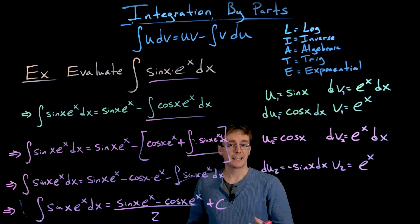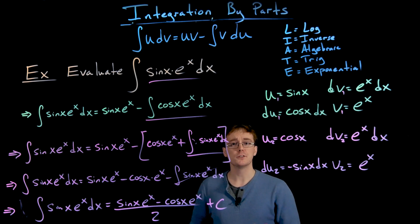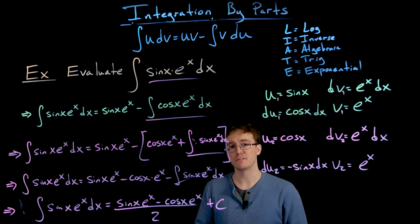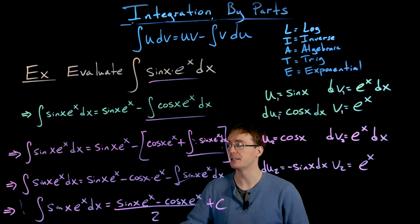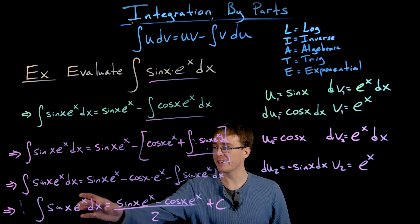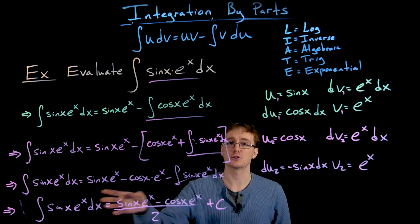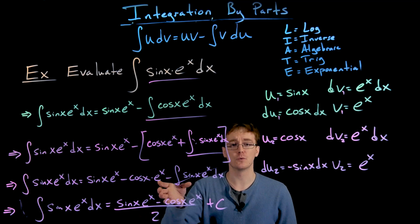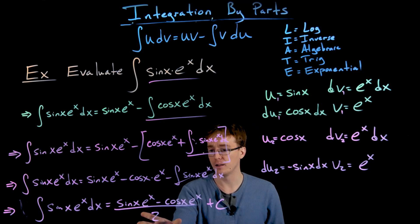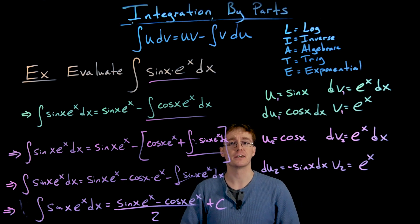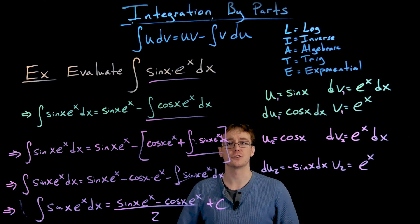The point of this example was to show that integration by parts sometimes must be used multiple times. Furthermore, when working with trig functions that cycle back through derivatives, the original integral may reappear — and when it does, integral algebra is the key to solving for the antiderivative.